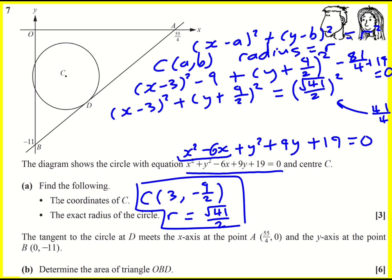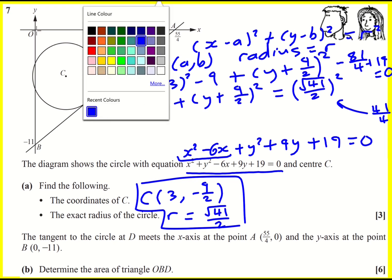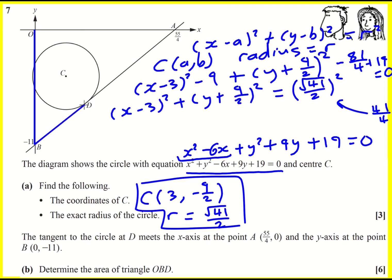I'm going to part B of this question where we have a tangent at D, so it just touches the circle, glances off of it, and this meets the x-axis when x is 55 over 4 and meets the y-axis when y is minus 11. And we're asked to find the area O, B, D. So we know this length actually—it's just going to be 11. And therefore the perpendicular, the perpendicular height, if you imagine turning it round, will be this thing here. So if I can find the x-coordinate of D, then I'm sorted.